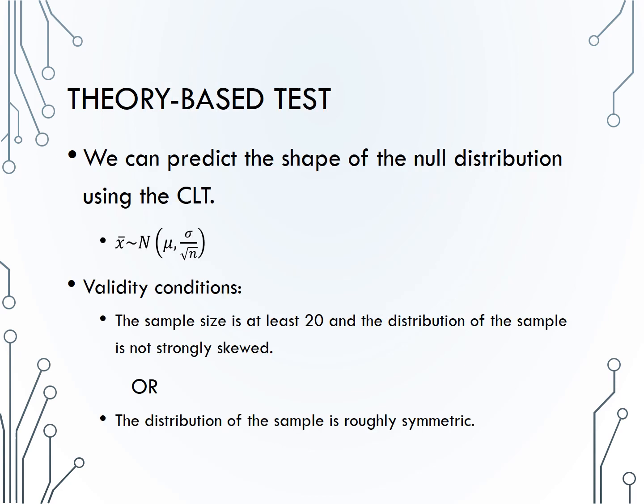A second method of analysis is the theory-based method. The central limit theorem, the same theorem which told us about the distribution of proportions from many samples, says the same thing about means, that means will be approximately normally distributed, centered at the population mean, with standard deviation sigma over the square root of n. Again, we need to check that the sample size is large enough, but the way to check this condition has changed.